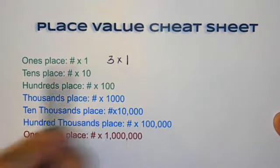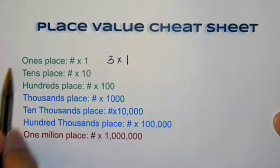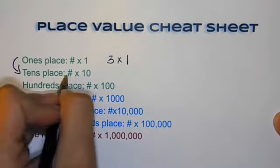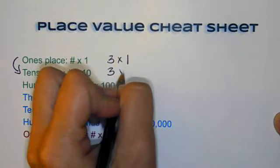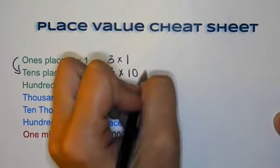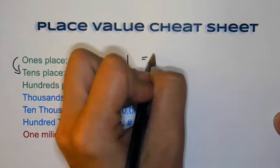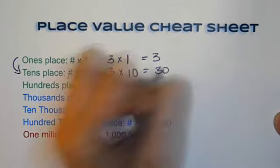If I move from the three in the ones place to a three in the tens place, that's like saying this number, which is three, and I'm going to move it one place and that would be three times 10, which would be 30, because this one would be three, and then this one would be 30.